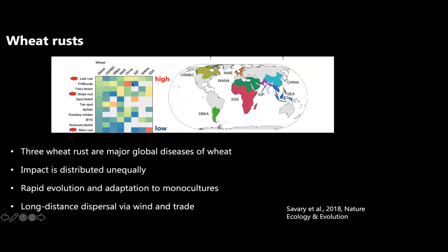Leaf rust is present everywhere year-round; stripe rust has more impact in Europe and sub-Saharan Africa. Stem rust, thanks to Norman Borlaug and extensive resistance gene breeding, is less problematic overall, but new strains in sub-Saharan Africa have huge impact there. These rusts come into a region and overcome resistance genes one at a time. Humans, through trade, traffic, or tourism, carry these diseases around — which is why good biosecurity measures in countries like Australia and New Zealand are so important.